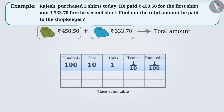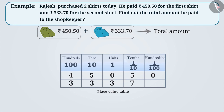In 450.50, 4 is in the hundreds place, 5 is in the tens place, 0 is in the units place, 5 is in the tenths place, and 0 is in the hundredths place. Similarly, we will arrange 333.70 in the place value table. As you can see, in both the numbers, the number of digits are equal after the decimal point, so there is no need to use a 0 here.